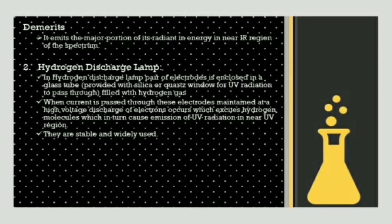Another source is the hydrogen discharge lamp. In this lamp, a pair of electrodes is enclosed in a glass tube filled with hydrogen gas. When current is passed through these electrodes maintained at a high voltage, discharge of electrons occurs which excites hydrogen molecules, causing emission of UV radiations in the near UV region. These lamps are very stable and widely used, making the hydrogen discharge lamp preferable compared to the tungsten filament lamp.